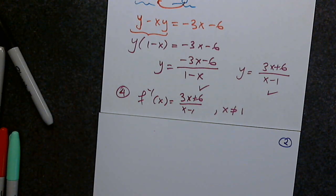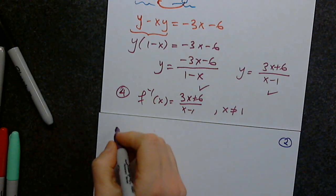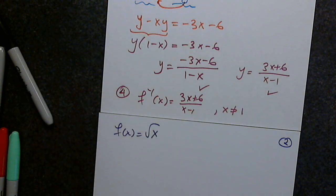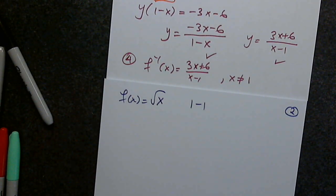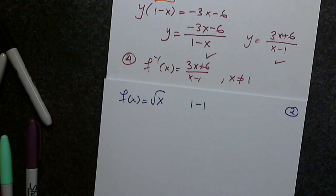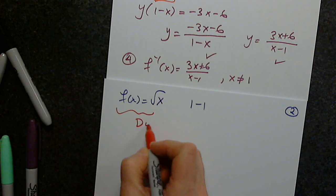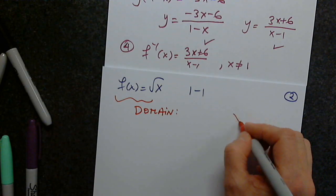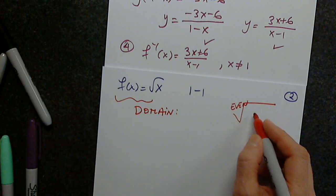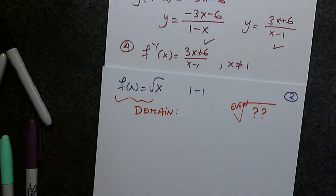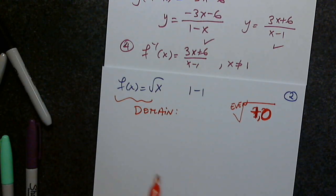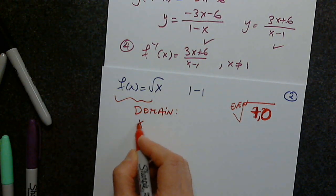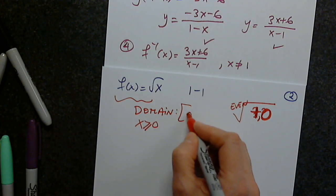I have one more and then we'll look at the student questions. We have a function f(x) = √x. We are told it's one-to-one, and we're asked to find f inverse. Can anyone give us the domain of this function? Every time I see a root with an even index, the quantity underneath must be greater than or equal to zero. So the domain is [0, ∞).